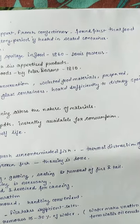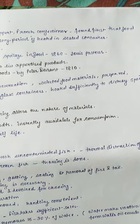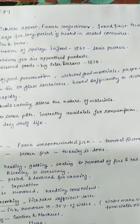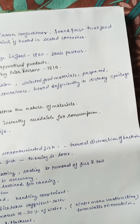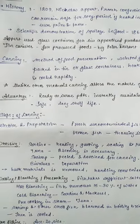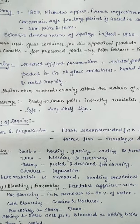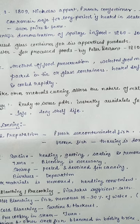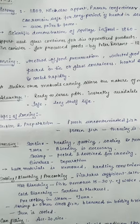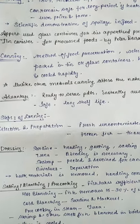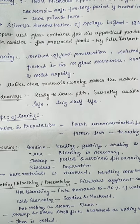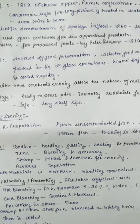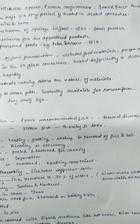Canning is a method of food preparation in which selected food materials are prepared and packed in tin or glass containers, then heated sufficiently to destroy spoilage organisms and cooled rapidly. The principle of canning is the thermal destruction of bacteria.